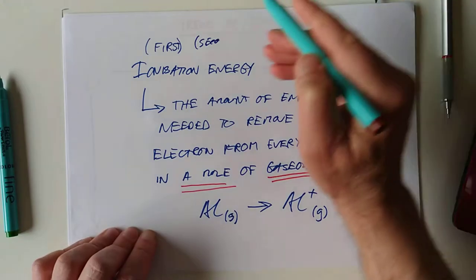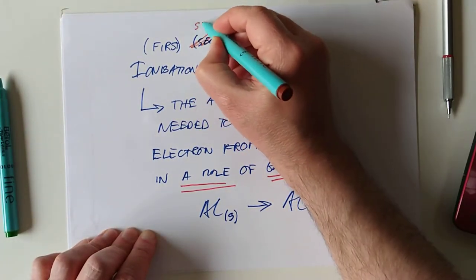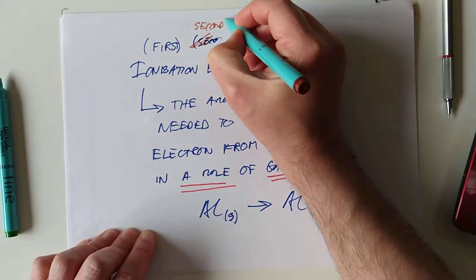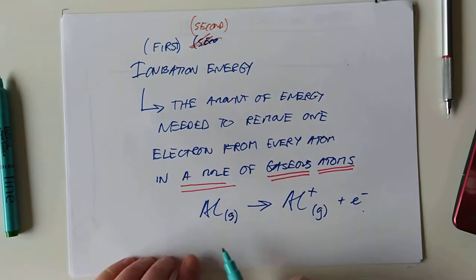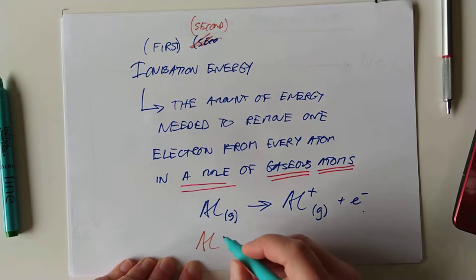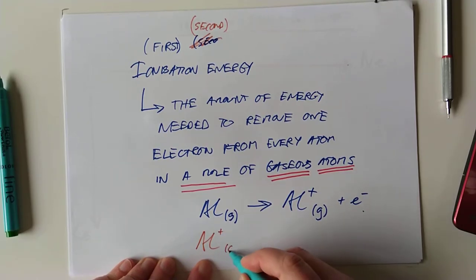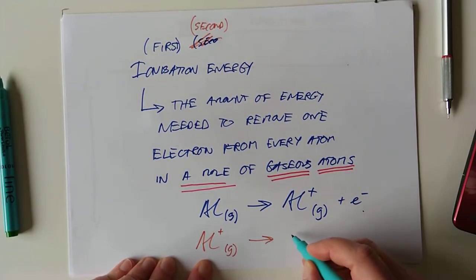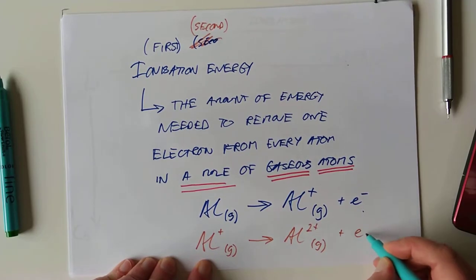Actually, let's use a different color for the second. Let's use my high-tech teaching aids. So what on earth would the second ionization energy be? Well, you're taking the second electron off. So we'd start this time around with Al1+ gas, and we're changing it into Al2+ by removing another electron.